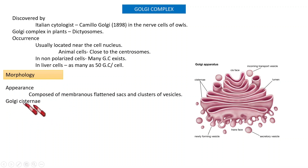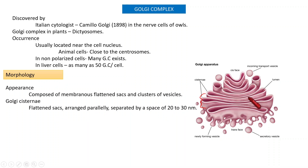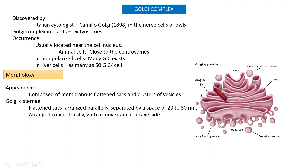Specific portions of the Golgi complex have distinct names. The Golgi cisternae refers to the middle portion — flattened sacks arranged parallel to each other. The distance between adjacent sacks is about 20 to 30 nanometers.